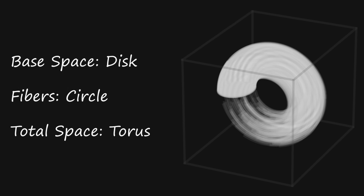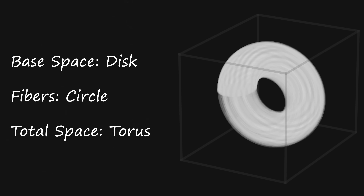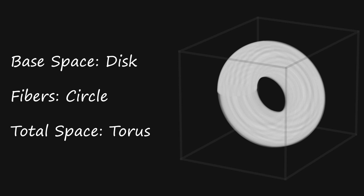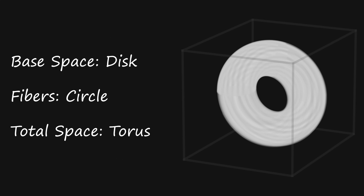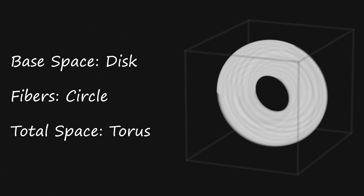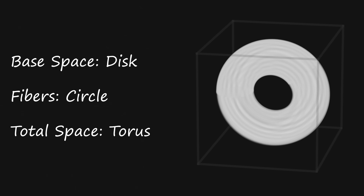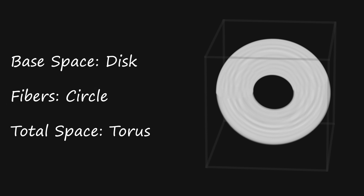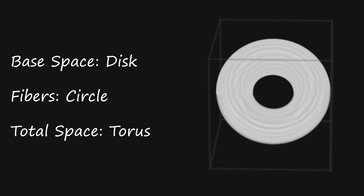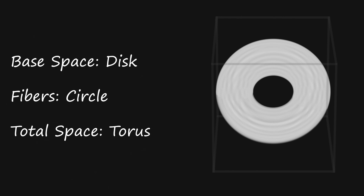Imagine what would happen if we take the same circular base space, but instead of extending fibers straight up, we extend them around in a big circle. Now what we're looking at is a base space of a circle, fibers that are a circle, and the total space is a torus.